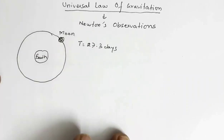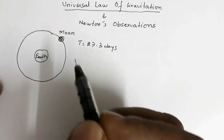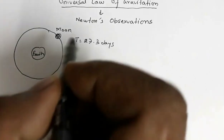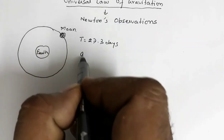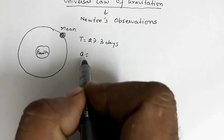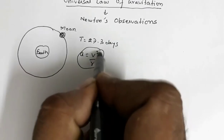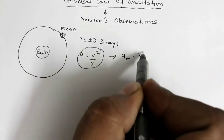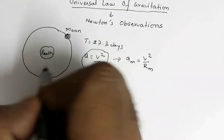Now, when the moon moves in a circular path it must be acted upon by a centripetal force, so there must be some centripetal acceleration. The centripetal acceleration is given by the expression a = v²/r. For the moon it is v² divided by rm, the radius of the path along which the moon is revolving.